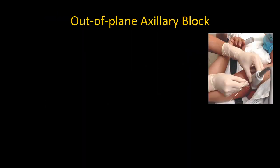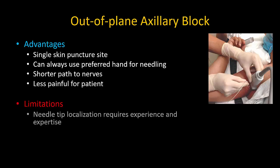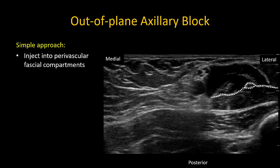Another approach is the out-of-plane approach. The main advantages are that it can always be achieved with a single skin puncture site, and regardless of which side you are blocking, you can always use the same hand for needling or probe handling. It also does not involve passing through the coracobrachialis, shortening the needle path and reducing procedural pain. The main limitations are that the out-of-plane approach is less familiar to most people, and unlike the in-plane approach, it is not generally possible if the shoulder cannot be abducted to 90 degrees and externally rotated. It is, however, a simple block as it basically involves injection into distinct fascial compartments around the axillary artery.